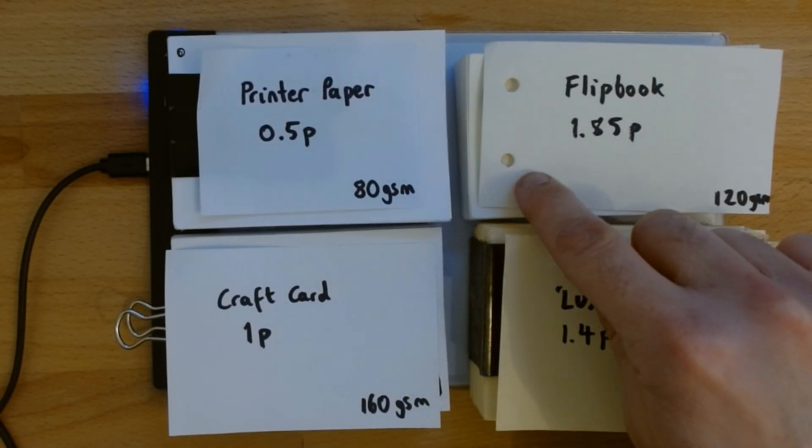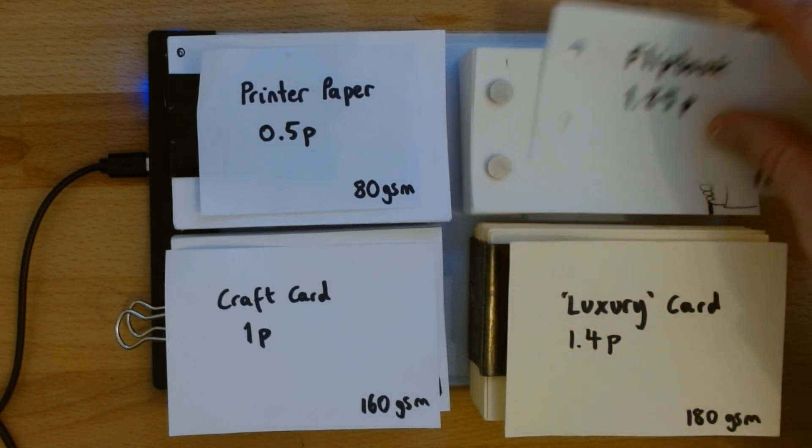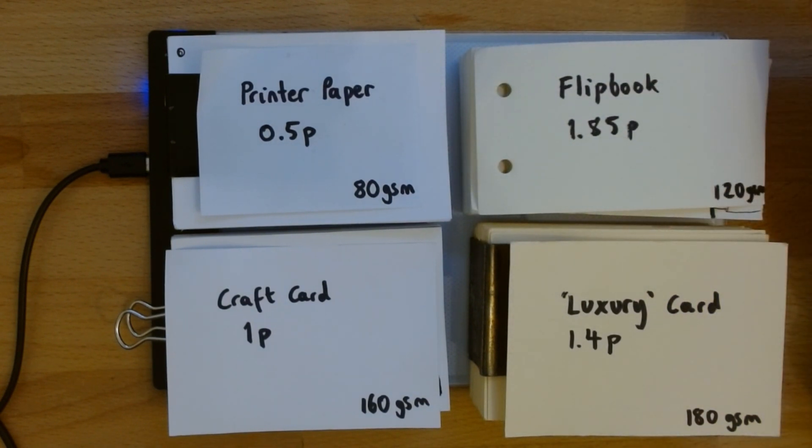Or if you can justify it and afford it, you can get these purpose-made flipbook books. I get mine on Amazon and they work at 1.85p a sheet. See you next time.